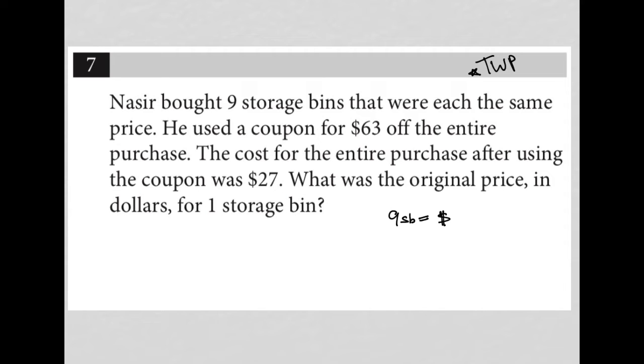So I don't know how much. Okay, so basically one storage bin is equal to X dollars. So nine storage bins would be equal to nine times X dollars. So he's spending nine X in terms of cost. And he's going to use a coupon for $63 off the entire price. So we're subtracting $63 from that nine X.